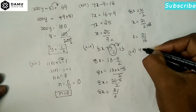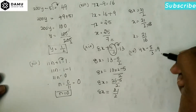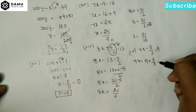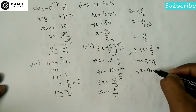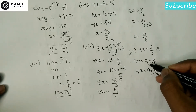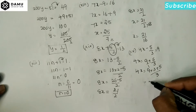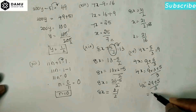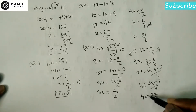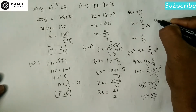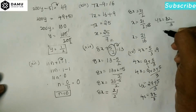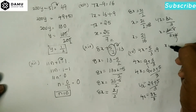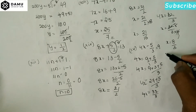The fifteenth one: 4x - 5/3 = 9. Shift -5/3 to the right side: 4x = 9 + 5/3. Taking LCM, 4x = (27 + 5)/3 = 32/3. Then x = 32/3 ÷ 4 = 32/12 = 8/3.